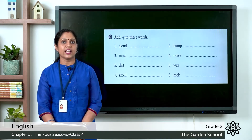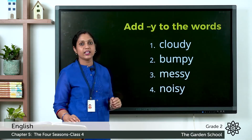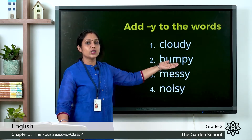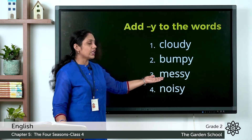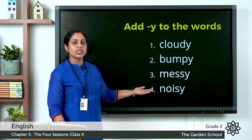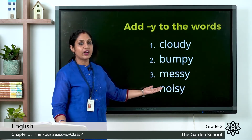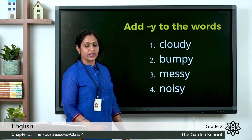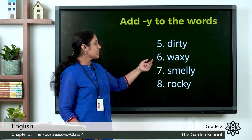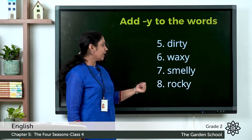Let's check the answers. Cloud becomes cloudy, bump becomes bumpy, mess becomes messy. For noise, the last letter is E — we omit the E and write Y instead, so it becomes noisy. Dirt becomes dirty, wax becomes waxy, smell becomes smelly, and rock becomes rocky.